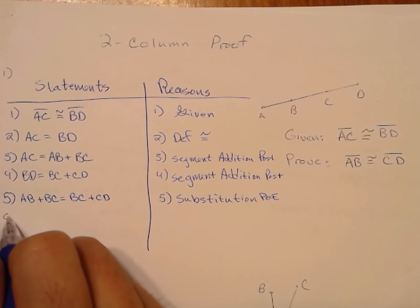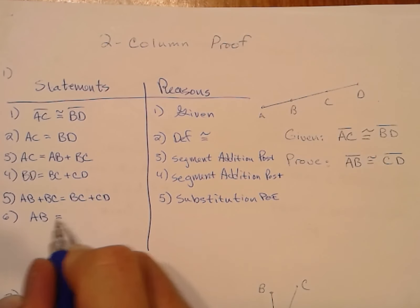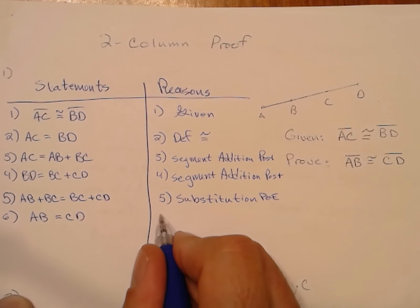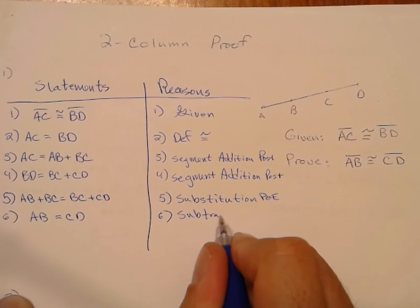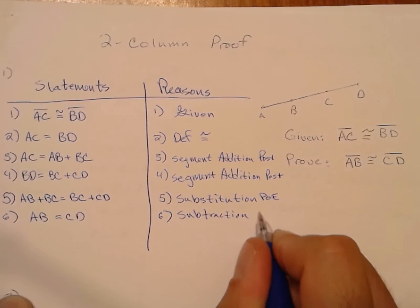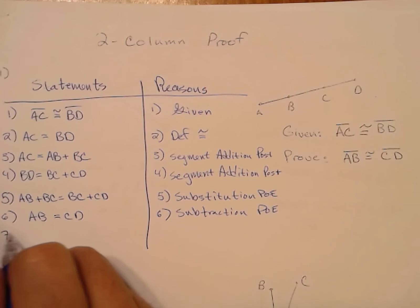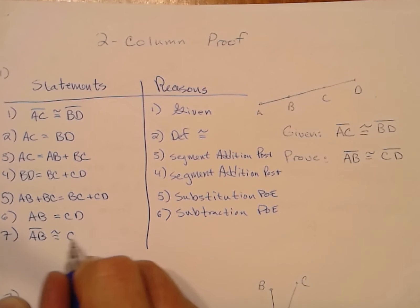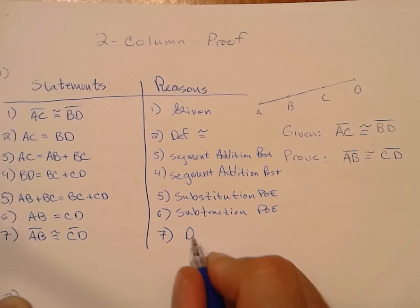Then we can subtract BC from both sides of the equation using the subtraction property of equality. And finally, we want to say that segment AB is congruent to segment CD. From that statement, that's just definition of congruence.